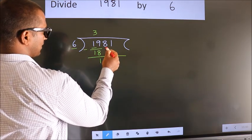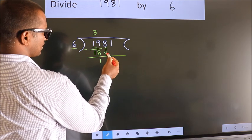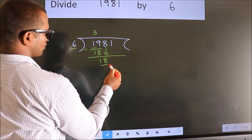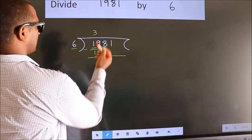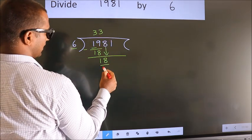After this, bring down the beside number. So 8 down. So 18. When do we get 18 in 6 table? 6 threes, 18.